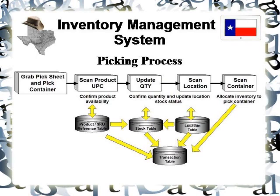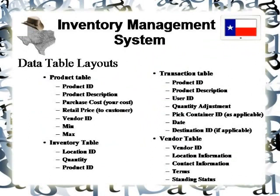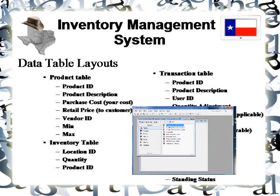Just to clarify — I won't go through how to build a pick sheet and the pick container process just yet, since this is going to be a fairly simple inventory management system. The key point is that as you go through your processes, keep an eye on the data you're going to capture and how you're going to organize that data. Here I have an example of four tables: a product table, a transaction table to capture every time somebody brings something in or takes something out, a vendor table, and your stock or inventory table.